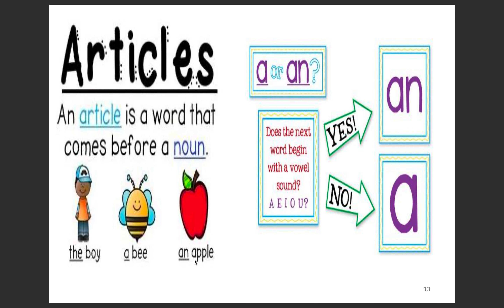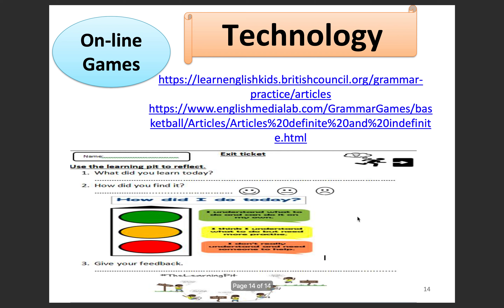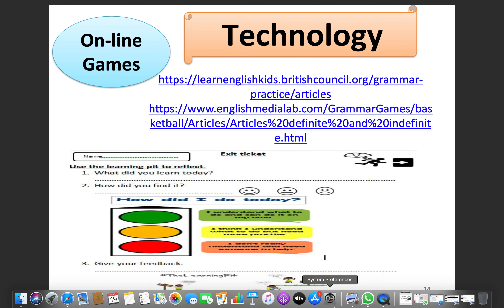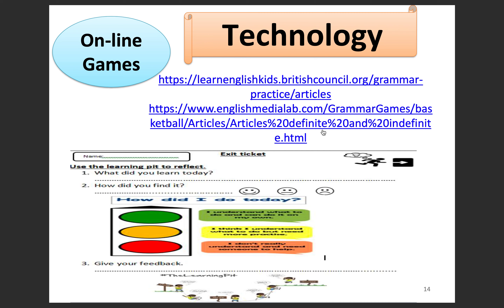If our noun begins with a vowel, we have to use the article an — an apple. And if our noun begins with something that is not a vowel, we use a — a bee. When you play these online games, you'll be able to practice identifying different articles and knowing when to use them. We've got two links here for you — make sure you check out these links. That is all for our first week of English. Thank you very much and have a good rest of the day.